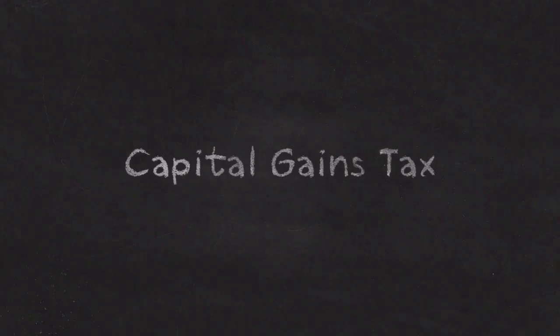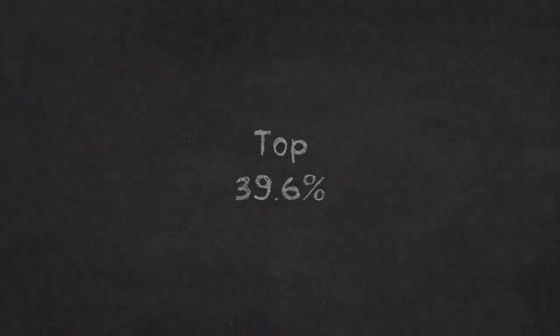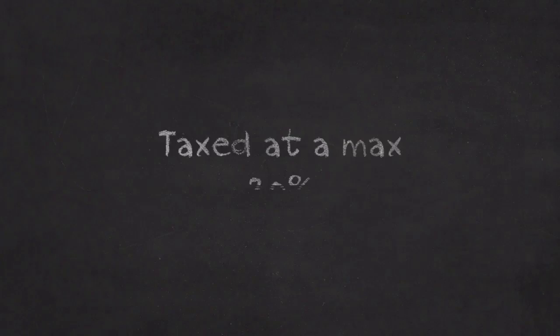Let's spend today talking about capital gains tax. The top tax bracket is 39.6% on all income above $400,000 a year. Although, if you own a stock or bond and hold that stock or bond for one year, and then sell the stock or bond at a higher price, aka a capital gain, then it is only taxed at a maximum of 20%.